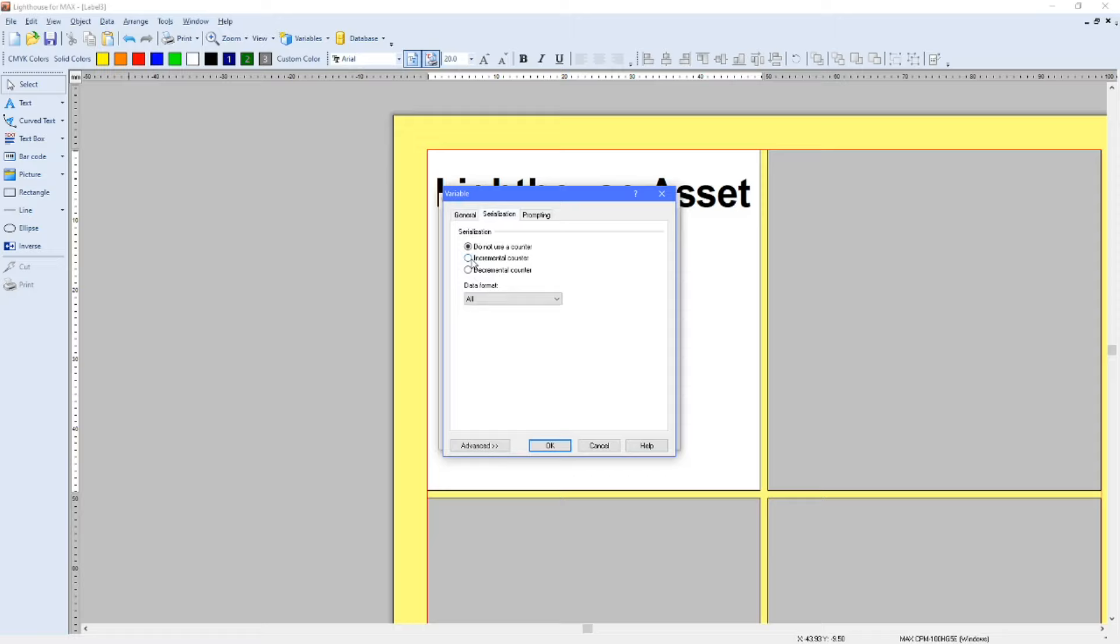Multiline is referring to if you have more than one line of the variable. Again, not required in this. If I go to serialization at the top, it's going to be an incremental counter. Again, you can go down as well, but I'm just going to change it to incremental. Numeric, I'm going to keep the data format too, because there's not going to be any letters or anything like that in the actual variable part of the label. I can just leave it as numeric.